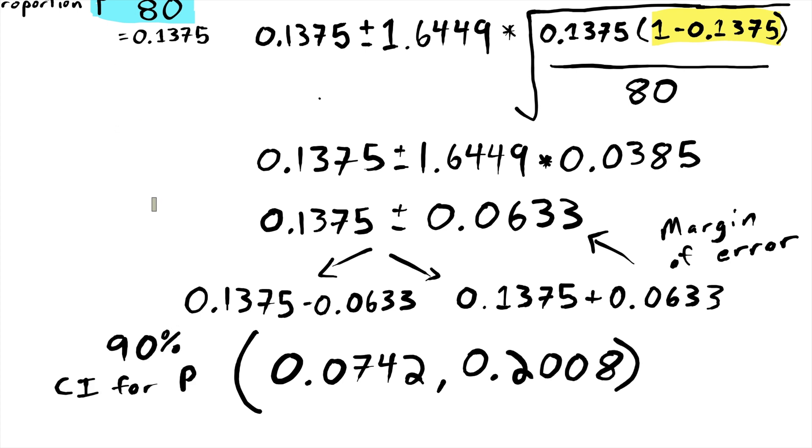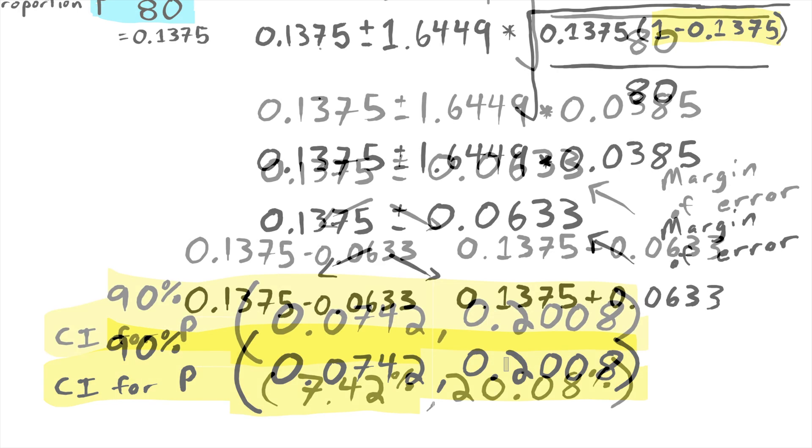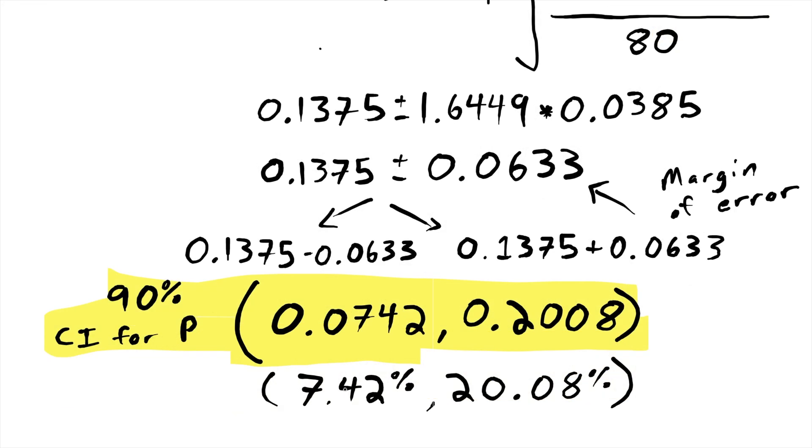That is the 90% confidence interval for my population proportion. I'm 90% confident that the true proportion of all working Americans that have a commute time of more than 60 minutes is between these two numbers. And as percentages, those two values look like this. So now let's look and see what happens if we want to change our level of confidence.